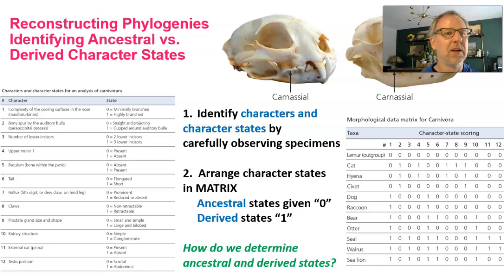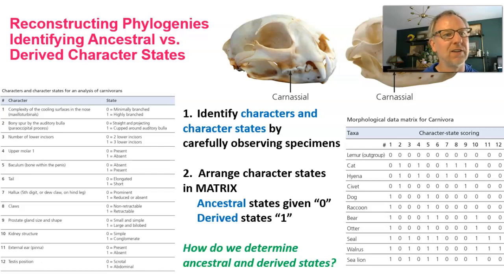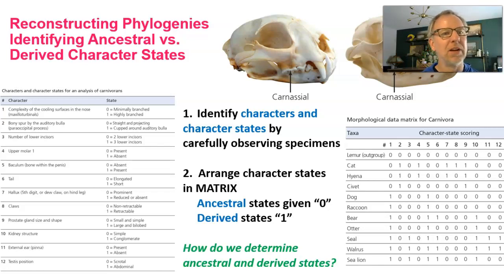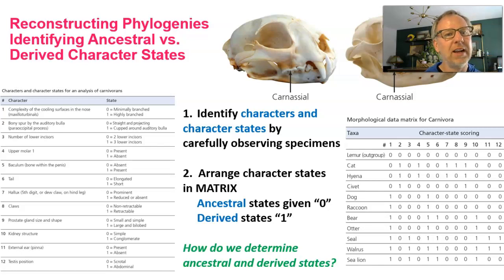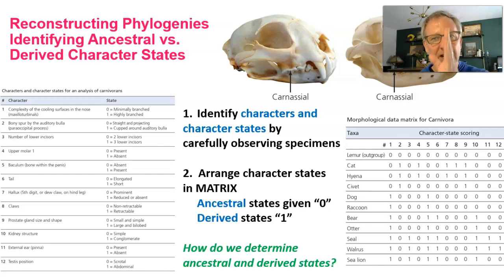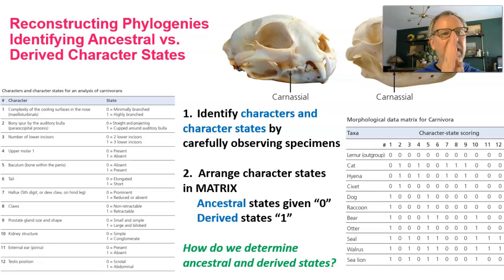As a character and character states, the character might be 'type of molar' and the character states might be 'flat molar' and 'carnassial molar' — those would be different versions. We carefully identify characters and then the different versions of them called character states. If you look at the data matrix on the left-hand side of the slide, it shows a column of characters — for example, the complexity of the cooling surfaces in the nose, called maxilloturbinals, where some mammals have minimally branched ones and some have highly branched ones.